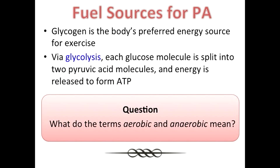Glycolysis is the process of breaking down glycogen. This occurs when each glucose molecule is split into two pyruvic acid molecules, and energy is released.